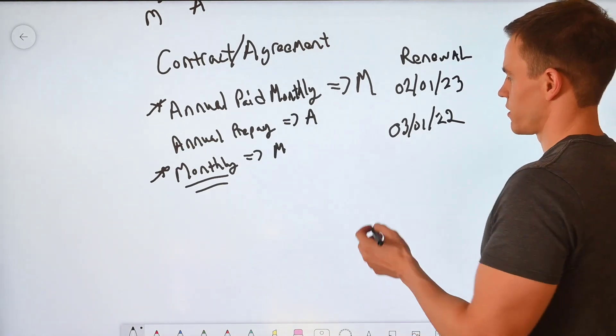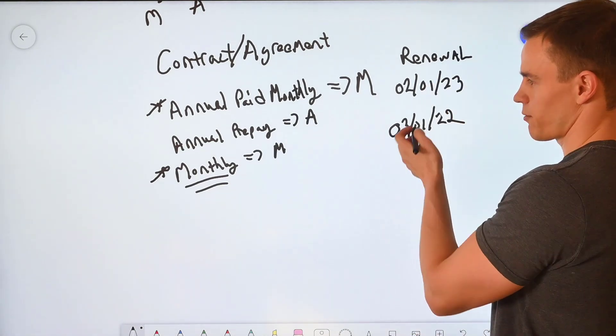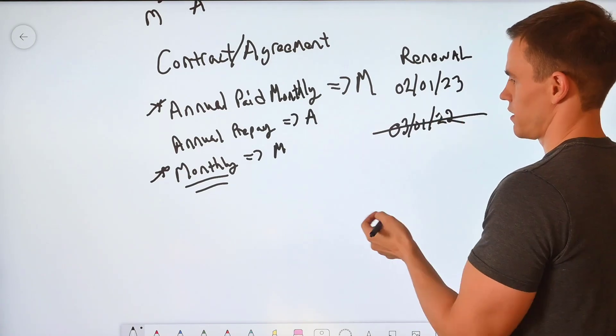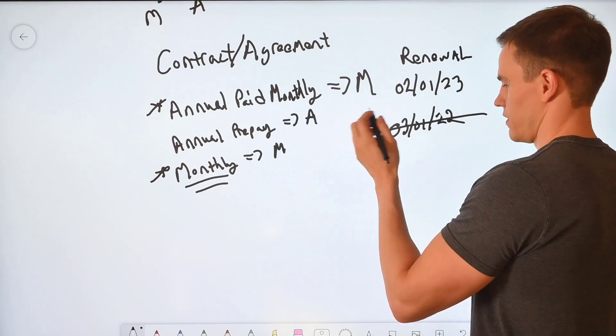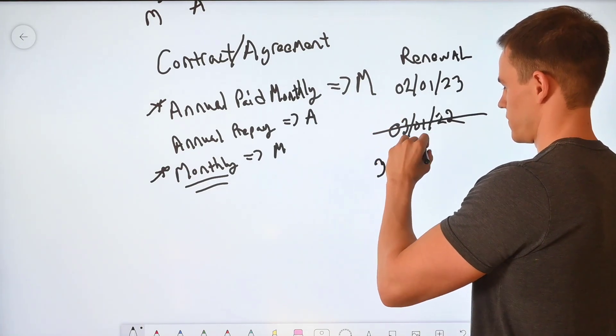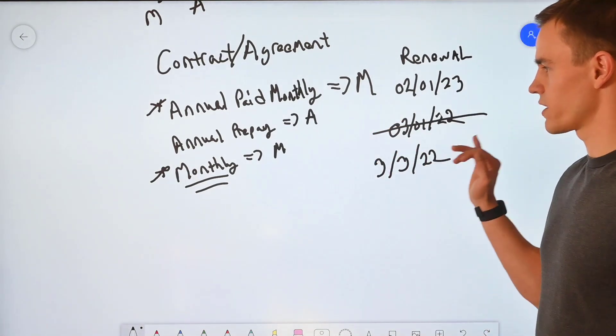And then I'll notify them before the contract's over for their first annual as well. The complexity though comes into play where you may have upgraded or purchased these on two separate days. So let's say instead of 3-1 for this monthly, you did it on the third of the month.